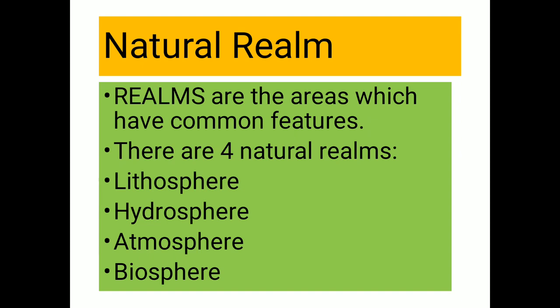Natural realms. What are realms? Realms are the areas which have common features. If any area on the surface of the earth has a common feature, then it is called a realm. There are four natural realms on the earth's surface.